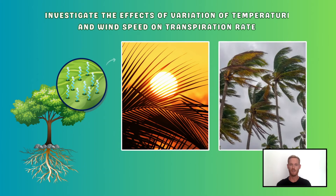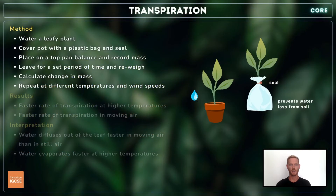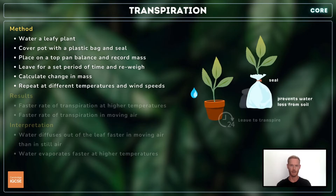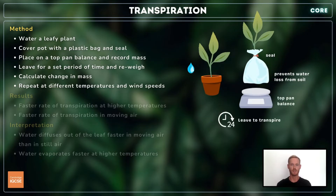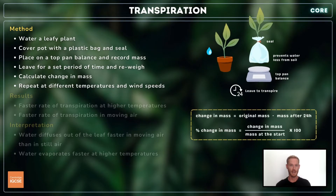Two factors that affect the rate at which water is lost from the leaves by transpiration are temperature and wind speed. To investigate these, a simple weight potometer is used. Thoroughly water a leafy plant, cover the pot with a polythene bag and seal around the stem with a piece of string. Place the plant on a top pan balance, record its mass, leave for a set period of time and re-weigh. You can calculate the change in mass and the percentage change in mass, which show how much water has been lost through transpiration.